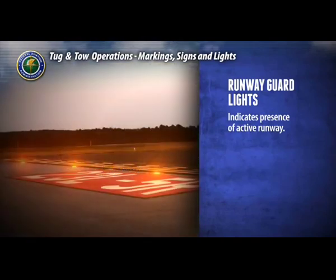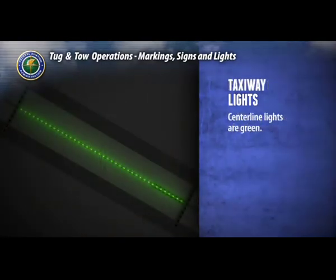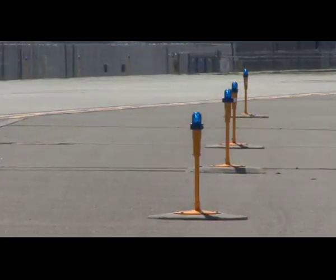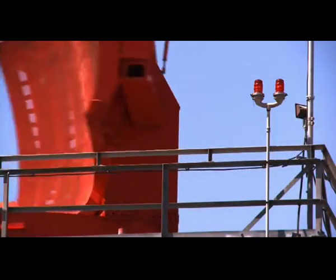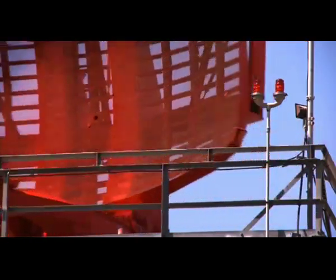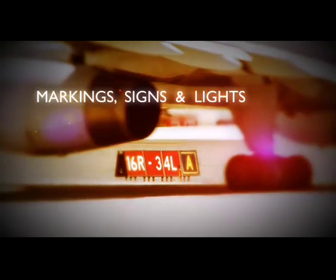In-pavement lights may also be used. Taxiway centerline lights are green. Taxiway edge lights are blue and outline the edges of taxiways. Obstruction lights are usually red or white and are mounted on surface structures or terrain that may pose a clearance or obstruction hazard to moving aircraft. This concludes the section on markings, signs, and lights.